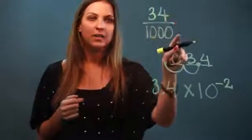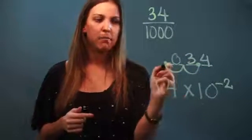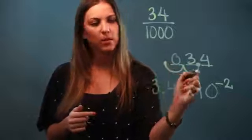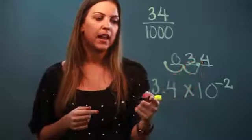So 34 over 1,000, I converted into 0.034, and then I made it scientific notation by moving the decimal until I got to a number that was greater than one and less than 10, and I got 3.4 times 10 to the negative second power.